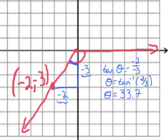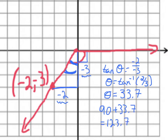That 33.7 degrees is just the measure of the angle from the x-axis corner of the triangle. We need to add that to the 90 degrees: 90 plus 33.7 gives us 123.7. But remember, since we went clockwise, this is a negative angle. So our answer is negative 123.7 degrees — and don't forget your degree sign.